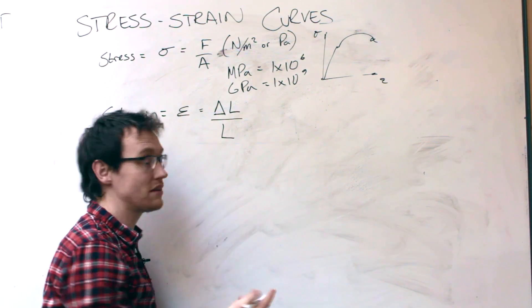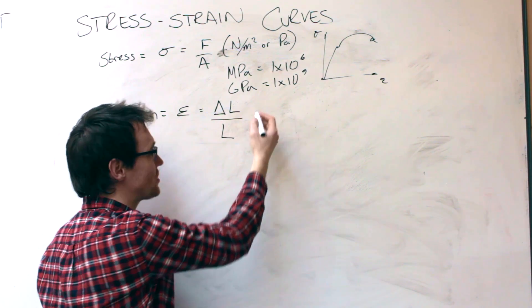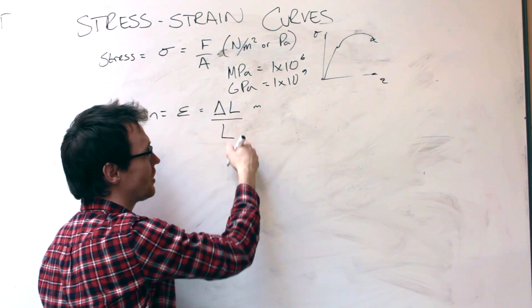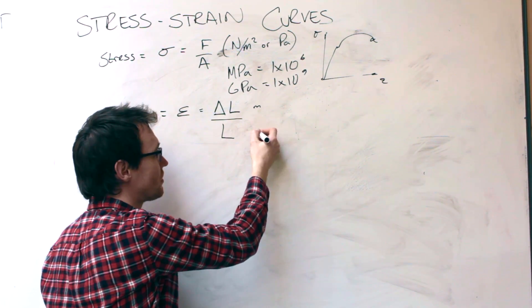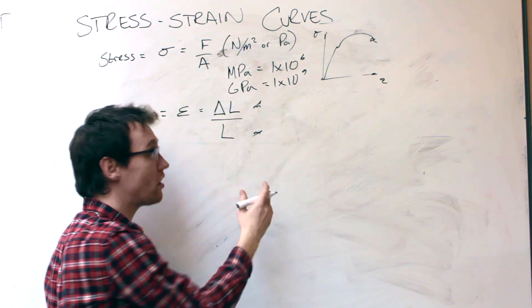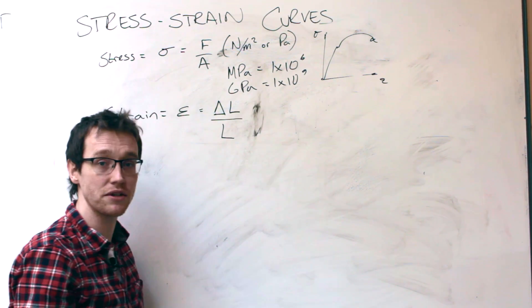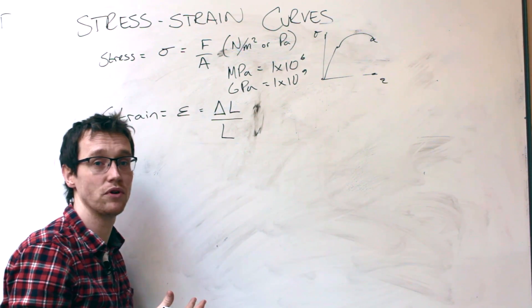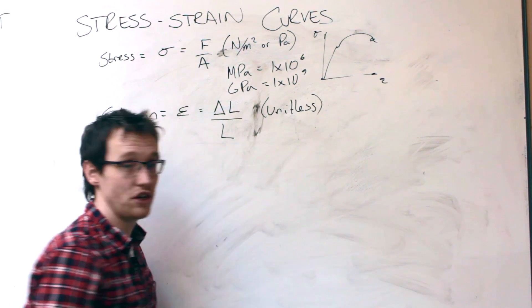This value has no units. If we do a unit analysis quickly, change in length's measured in meters, original length's measured in meters, they cancel. There are no units. It's just a percentage increase and typically be a very small number. It is a unitless quantity.